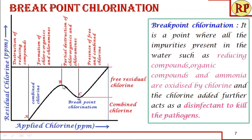Beyond B, as chlorine is added, the chloro-organics and chloramines are partially destroyed, so the combined chlorine slightly reduces up to point C. We call this the breakpoint chlorination point, because we assume that most of the reducing compounds, organic impurities and nitrogen impurities are oxidized. Further addition of chlorine beyond this breakpoint acts as a disinfectant to kill the microorganisms. Beyond C, this is free residual chlorine that acts as the disinfectant to kill the pathogens, so it is very important for us to identify this point.